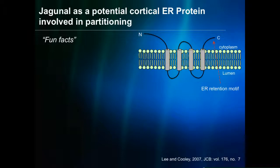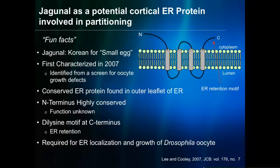In hypothesizing what could be driving this, we turned to a protein called Jaganol. Jaganol is an ER-associated protein that also associates with the cortex, and we hypothesized that ER partitioning would occur through a connection with the cortex. Jaganol came from a collection in Ruth Lehman's lab looking at oogenesis — it means 'small egg' in Korean and is highly conserved from yeast to humans. Its N-terminus is not well characterized, but it contains a dilycine motif involved in ER retention, specifically COP1 retention. It's required for growth and localization of the Drosophila oocyte, as outlined in Lynn Cooley's lab.